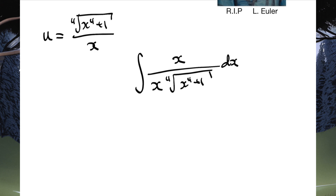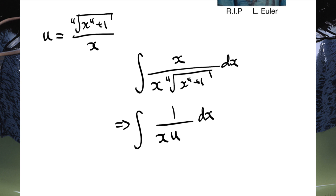Because now, when we implement our substitution, what we're going to get is the integral of 1 over x·u dx. We need to deal with that dx by differentiating the substitution u. So, let's do that.